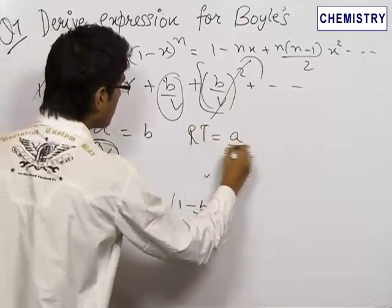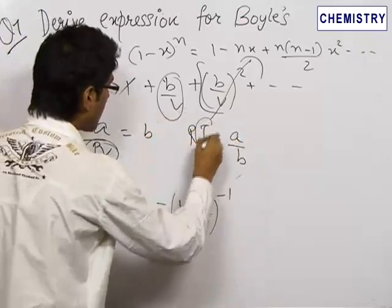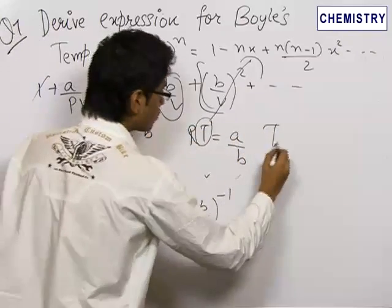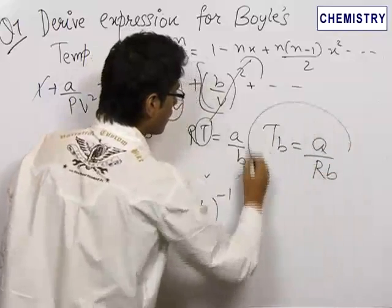So, RT is equal to A upon B. Now, after all these calculations, the T which we get is the Boyle's temperature. So, Boyle's temperature is equal to A upon Rb.